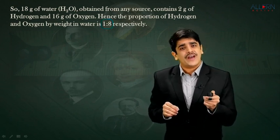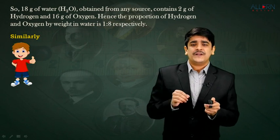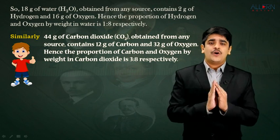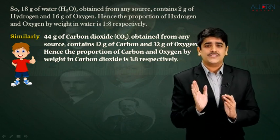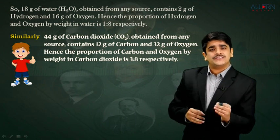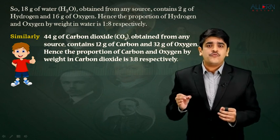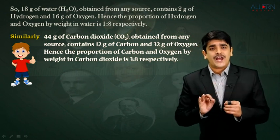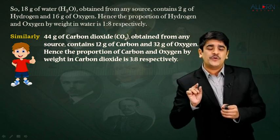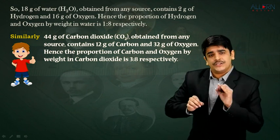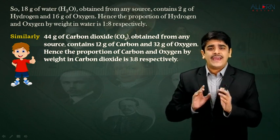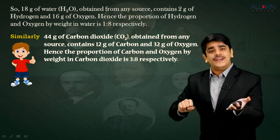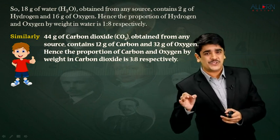Next, we must discuss other compounds. For example, carbon dioxide is given by the formula CO₂. Taking 44 grams of carbon dioxide, within those 44 grams, 12 grams is carbon and 32 grams is oxygen. Hence the proportion of carbon and oxygen by weight in carbon dioxide is exactly 3 is to 8.